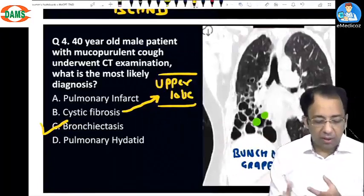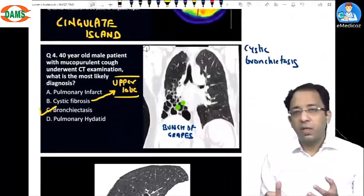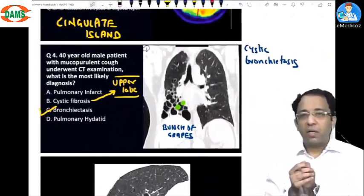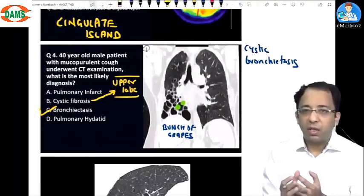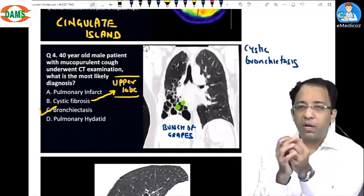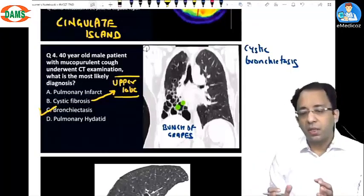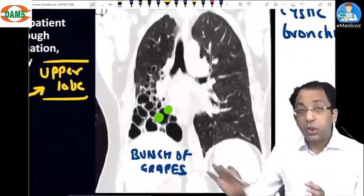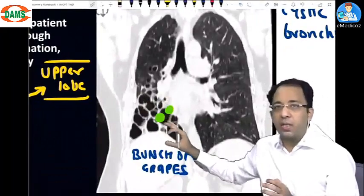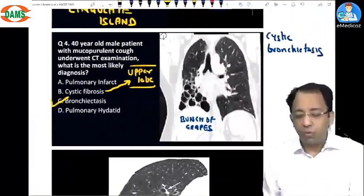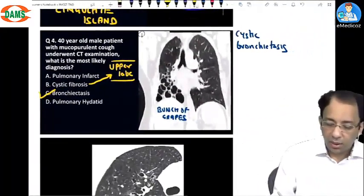Why is this not an infarct? An infarct in the lung is a hemorrhagic infarct — blood fills the alveoli and it appears as an opacity. Here you see lucencies, dark areas. Infarction in the lung is seen as an opacity, not lucency.